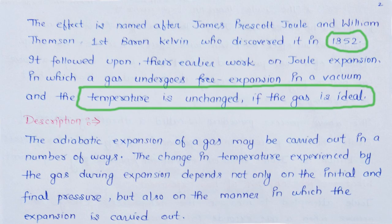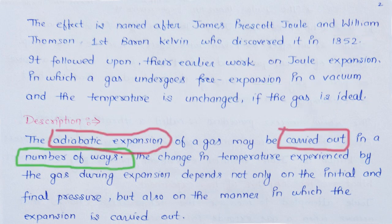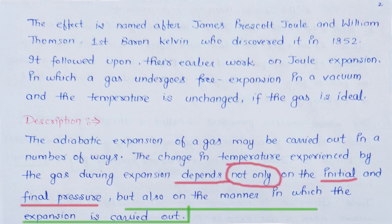यह experiment Joule के earlier experiment — Joule free expansion — के base पर किया गया था, जिसमें ideal gas में free expansion के बाद temperature change नहीं हुआ था। किसी भी gas या liquid का adiabatic expansion कई different methods से कराया जा सकता है। Temperature में change होना केवल initial और final state पर ही नहीं, बल्कि expansion procedure किस तरह कराया जा रहा है उस पर भी निर्भर करता है।